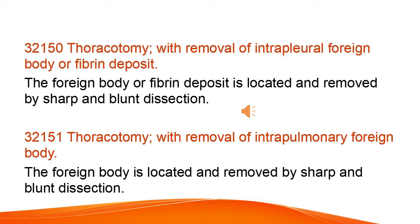Thoracotomy with removal of intrapleural foreign body or fibrin deposit: the foreign body or fibrin deposit is located and removed by sharp and blunt dissection. Thoracotomy with removal of intrapulmonary foreign body: the foreign body is located and removed by sharp and blunt dissection.